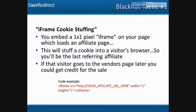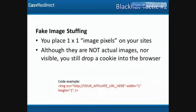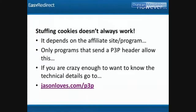Another black hat method is fake image stuffing — using a one-by-one image pixel with an affiliate URL as the source, but with width and height of one, stuffing hundreds or thousands of cookies on web pages. That robs vendors and legitimate affiliates because these people aren't actually selling anything — they're stealing. Black hat sucks. But importantly, cookie stuffing doesn't always work. It depends on whether the affiliate site sends a P3P header — you can find more about that at jasonloves.com/p3p.